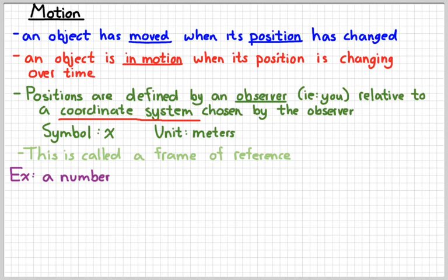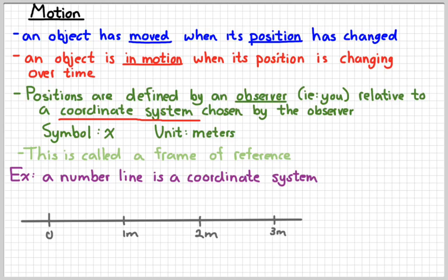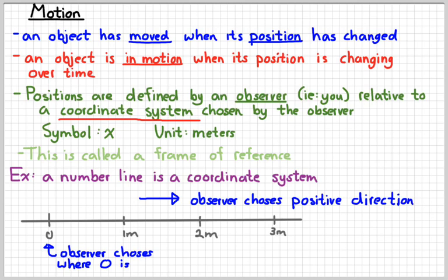For example, a number line could be considered a coordinate system, and this is essentially what we did when we did the bowling ball lab. We set up a number line in the hallway. I, as an observer, chose where zero was going to be. I just put a piece of tape randomly on the floor and said this is where I'm going to make measurements from. Then I as the observer chose which direction was going to be the positive direction. These are choices that the observer gets to make.